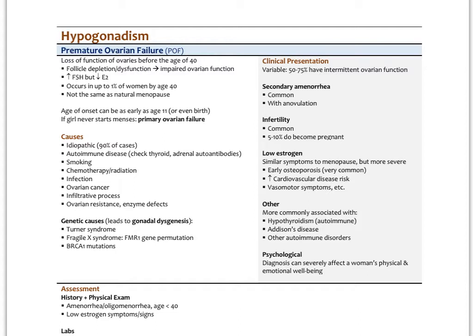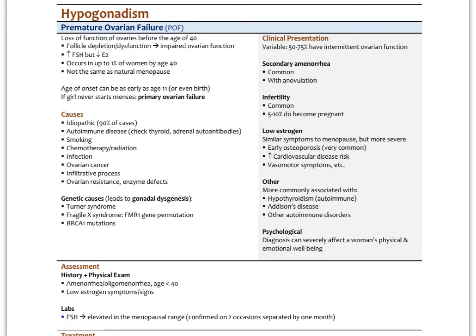90% of premature ovarian failure cases are idiopathic, most likely a combination of environmental factors. Autoimmune disease plays a role — patients with autoimmune thyroiditis and Addison's have increased risk. Other causes include smoking, chemotherapy, radiation, infections, pelvic inflammatory disease, ovarian cancer, infiltrative processes like sarcoidosis or hemochromatosis, ovarian resistance, and various enzyme defects. Genetic causes include Turner syndrome, Fragile X syndrome, and BRCA1 mutations. In the majority of cases, no particular cause is isolated.